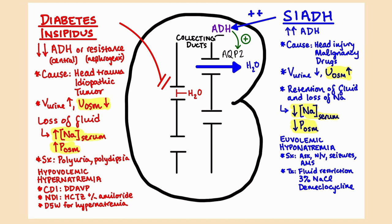ADH has two major functions, but the most relevant here is that it tells cells at the collecting duct of the nephron to insert aquaporins — channels that allow the kidney to pull water back into the bloodstream. So you resorb water, which replaces blood volume. Because you're reabsorbing free water — no sodium, no other electrolytes — it has a dilutional effect, resulting in low plasma osmolality and low serum sodium.